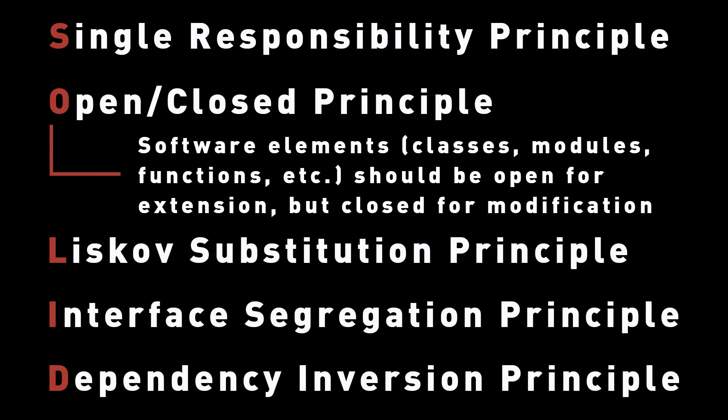A dead simple explanation of the open closed principle is this: software elements — classes, modules, functions, etc — should be open for extension, but closed for modification. Essentially, this means that you should be able to build your classes in a way that you can extend them via child classes and inheritance, and that once you've created the class, it no longer needs to be changed. The original concept was credited to Bertrand Meyer when he coined the term back in 1988 in his book, Object Oriented Software Construction.